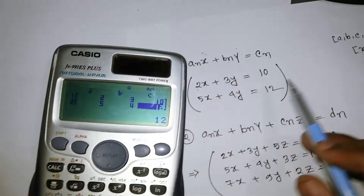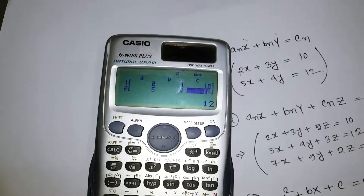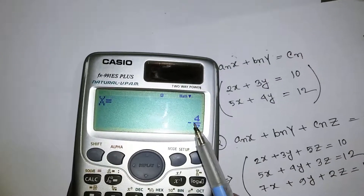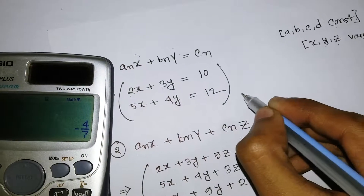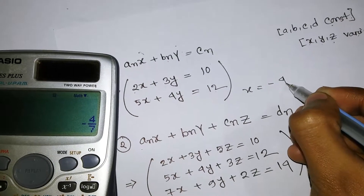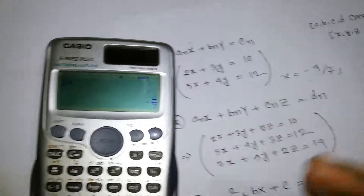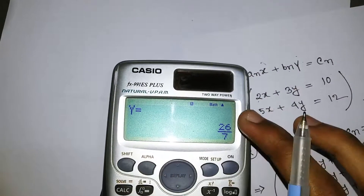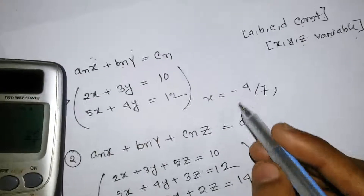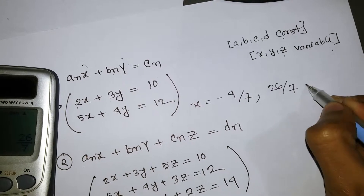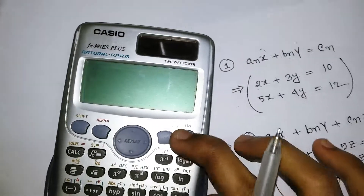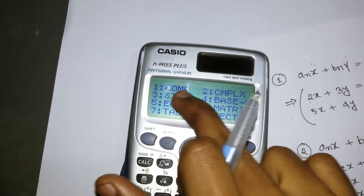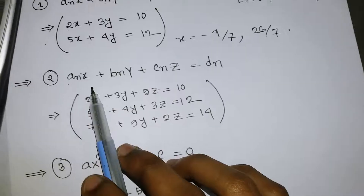Continue entering the second equation constants: 5 equal, 4 equal, 12 equal. We've now set all the constant values. Press equal again to find the solution — X equals minus 4 over 7. Press equal one more time to get Y, which equals 26 over 7. The first equation is solved. To go back to normal, press Mode and select 1 for COMP mode.